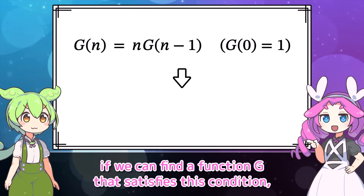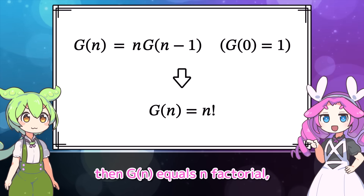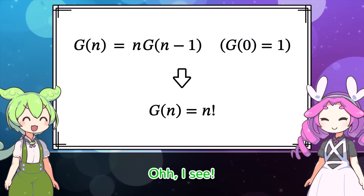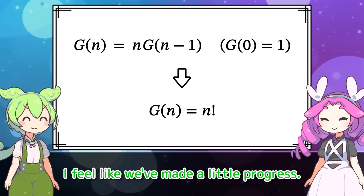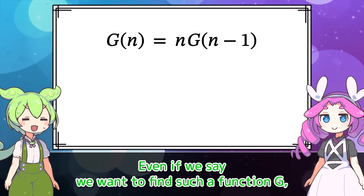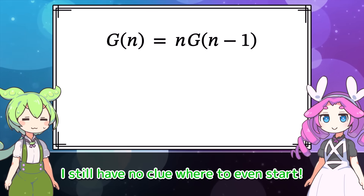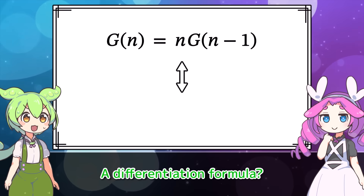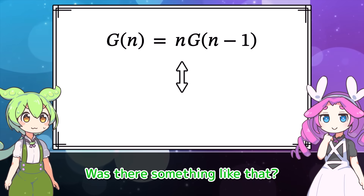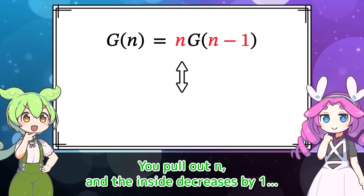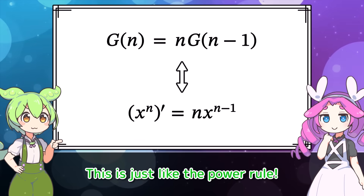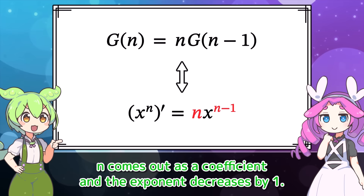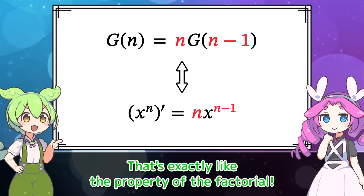That means, if we can find a function g that satisfies this condition, then g of n equals n factorial. So g is the generalization of the factorial. Calm down and look at this equation. Doesn't it look similar to a differentiation formula? You pull out n and the inside decreases by 1. This is just like the power rule: when you differentiate x to the power of n, n comes out as a coefficient and the exponent decreases by 1. That's exactly like the property of the factorial.